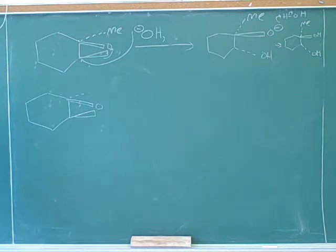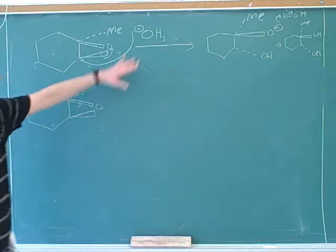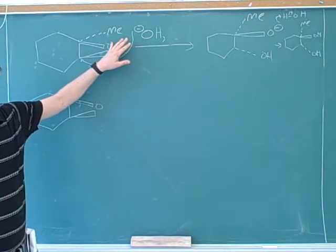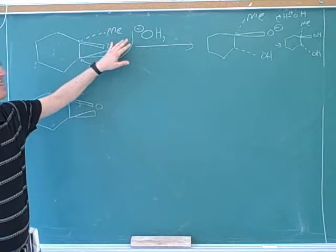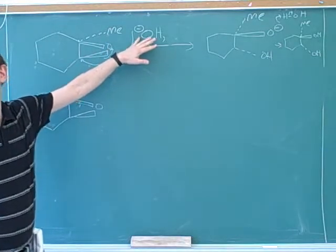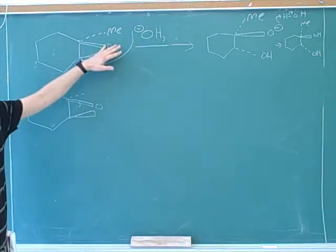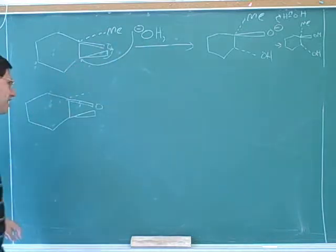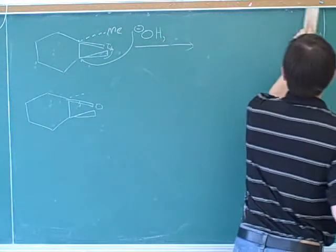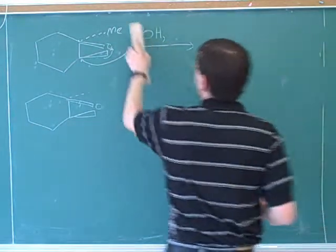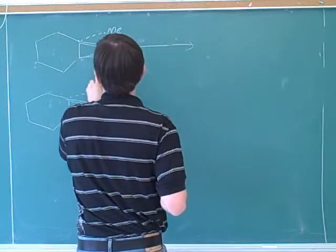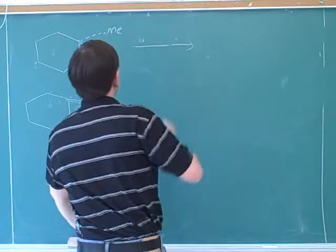I screwed up. How did I screw up? I screwed up because it doesn't matter where this attacks because this is the same atom as this. I shouldn't have used an oxygen because it doesn't matter whether this attacks above or below — this is an oxygen too. If you have two oxygens, it doesn't matter where things attack. Now let's go back and try again. With two oxygens, it doesn't matter where you attack because you'll still get an oxygen on either side.